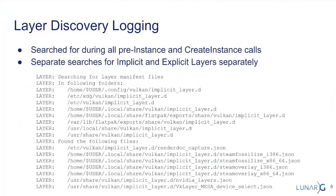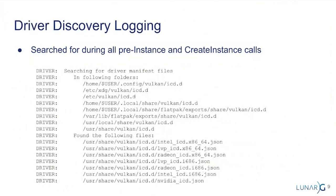Here's an example where I'm dumping out some of the layer information. In this case, it searches for layers during several instances — any pre-instance call, for example enumerate instance layers, and also during create instance. You're going to see a search by the loader for whatever implicit and explicit layers are available. You can see it searching through home directories and standard system directories. The way that layers and drivers are found by the Vulkan loader is through the concept of a manifest file — basically just JSON files. So you'll see here are all the JSON files found on the system, and one of these layers might be used.